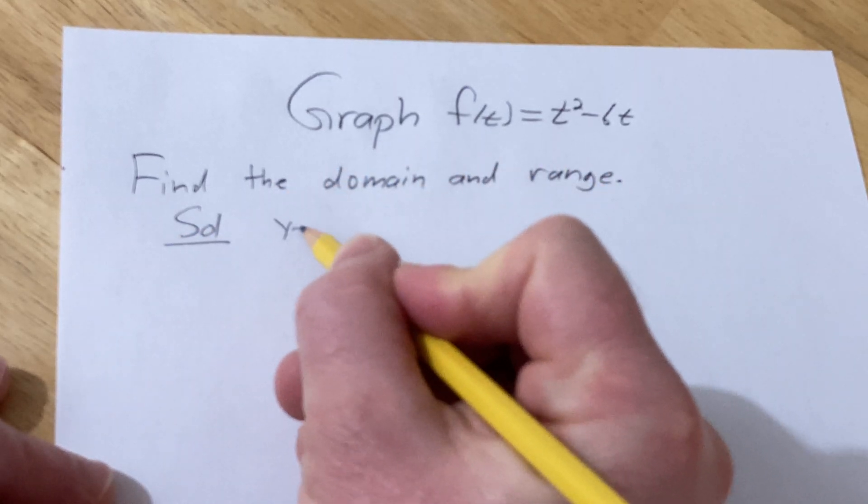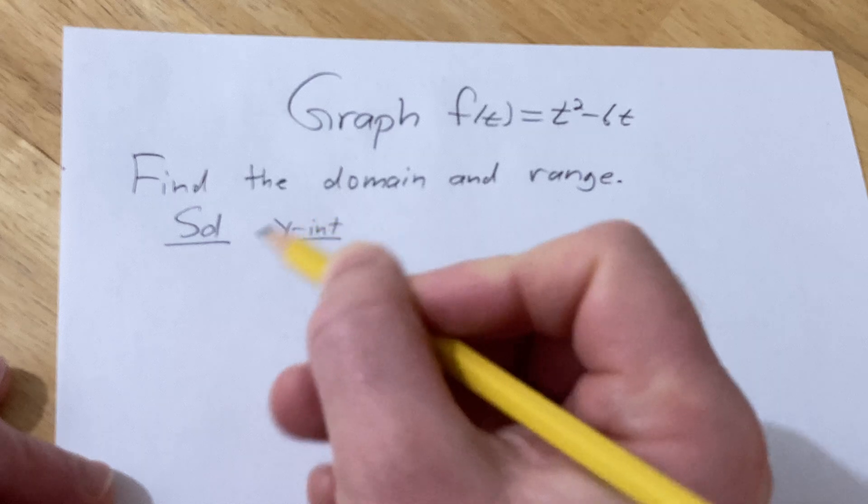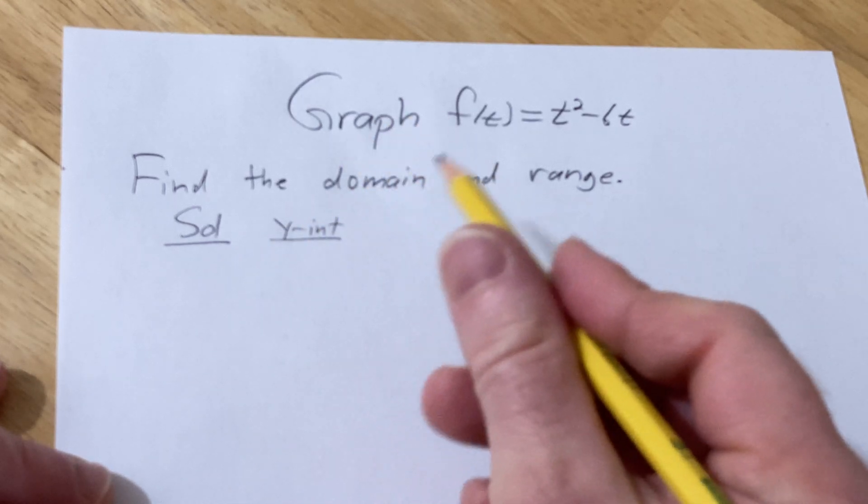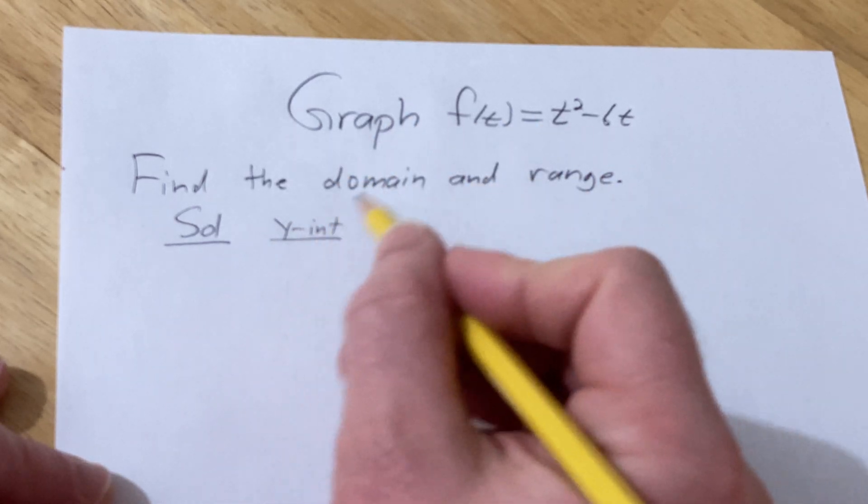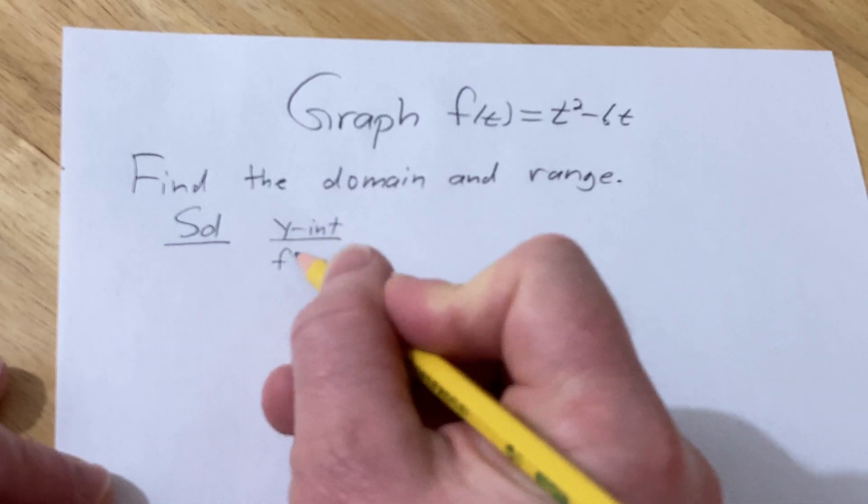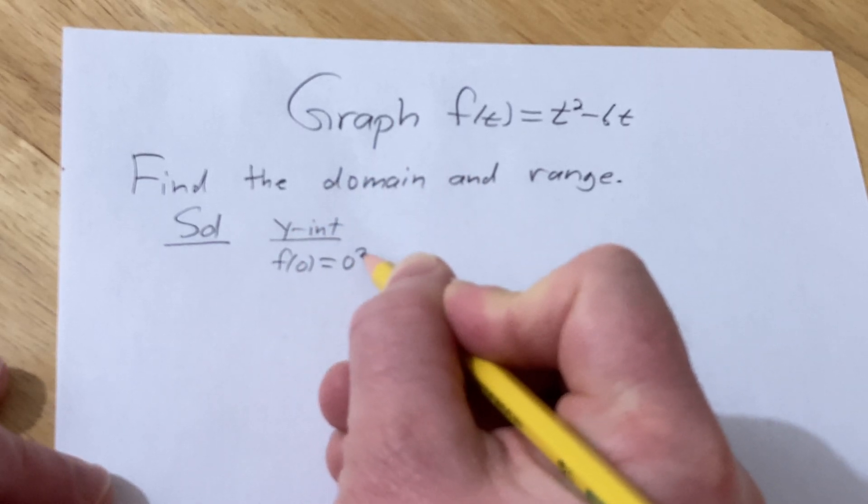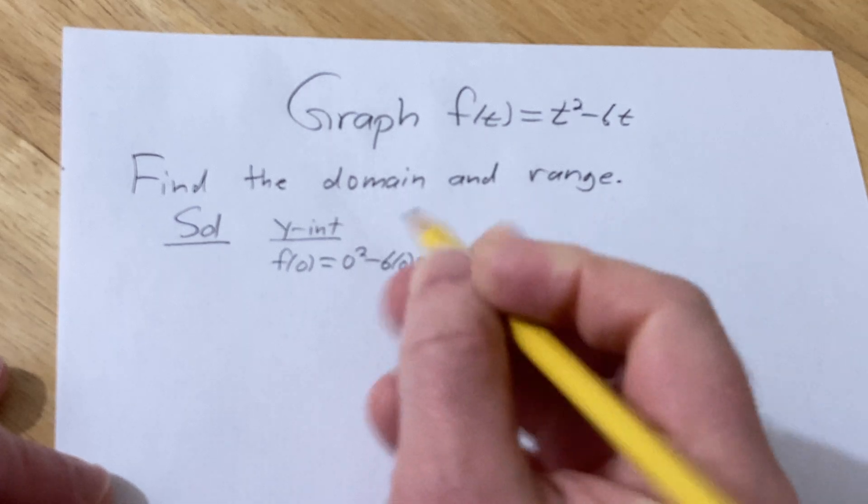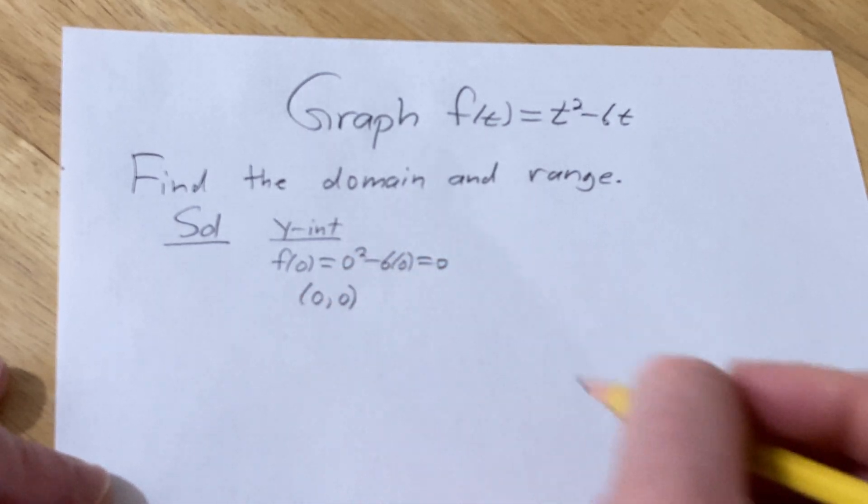Let's start by finding the y-intercept. To find any intercept you set the other one equal to zero. So to find the y-intercept in this case you set t equal to zero. It'll be zero squared minus six times zero so you get zero. So the y-intercept is zero, zero.